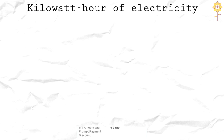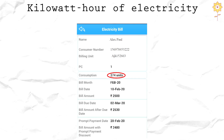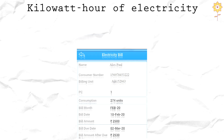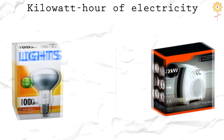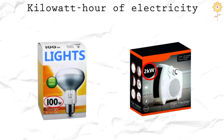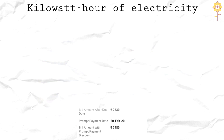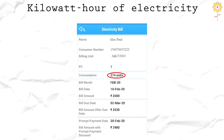Your power bills will show that you've been charged for a certain number of KWH that you use, and electrical goods are rated in W or KW when you buy them. The unit of measurement for your electricity bill is the kilowatt hour.